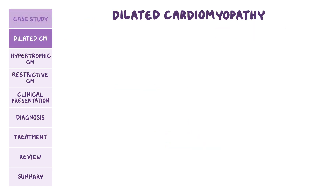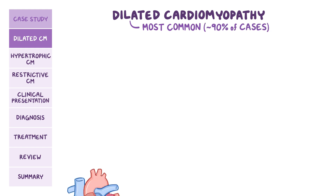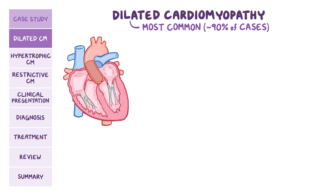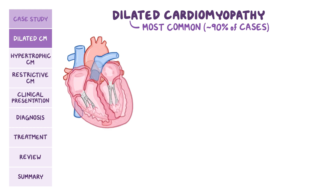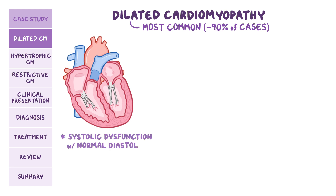Dilated cardiomyopathy is the most common subtype, accounting for almost 90% of all cases. In dilated cardiomyopathy, the ventricular walls become thin and weak, and as a consequence, the ventricular chambers dilate. Because the ventricular wall is thinner, muscle contraction is weaker and the heart can't pump blood efficiently throughout the body. So we have systolic dysfunction with normal diastole.